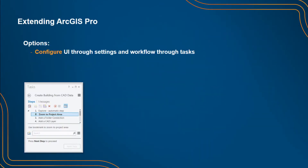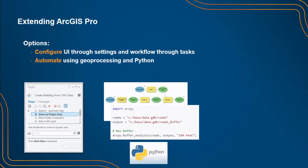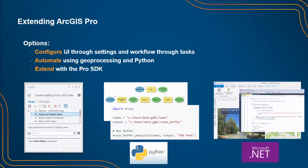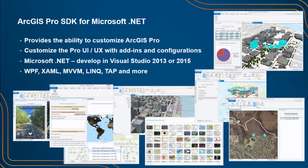There are three main ways of extending ArcGIS Pro. First, through standard UI settings and the new concept of tasks, which provides the ability to streamline a workflow and have your users work in a very unique way with their projects. Second is with Python and geoprocessing — this gets into scripting and provides the opportunity to automate Pro. And the last way is to extend Pro with the Pro SDK, which covers UI and user experience customization using add-ins and configurations.